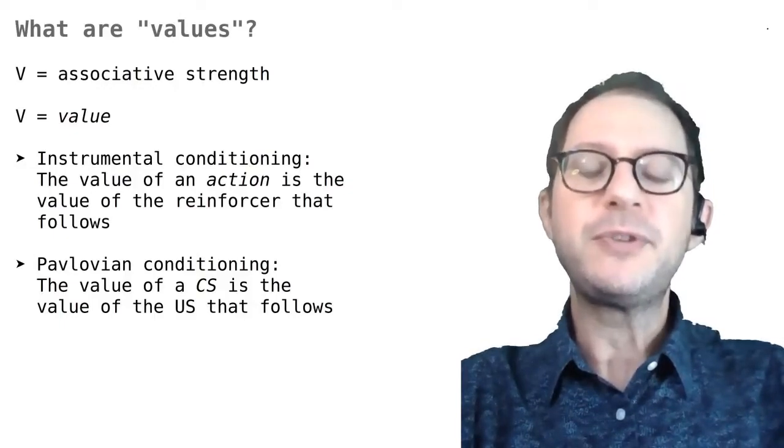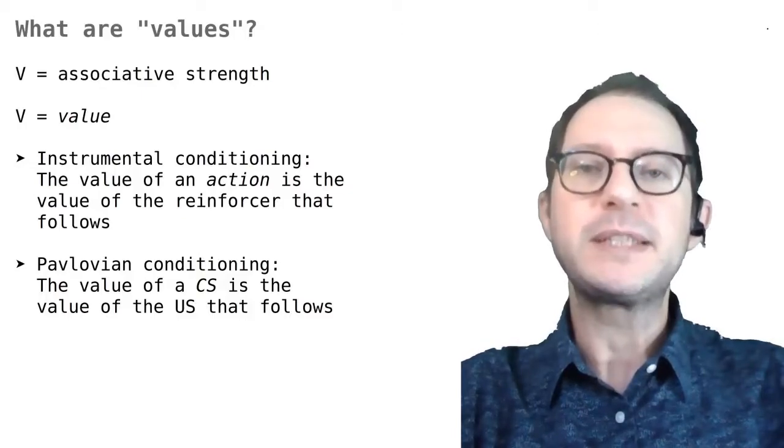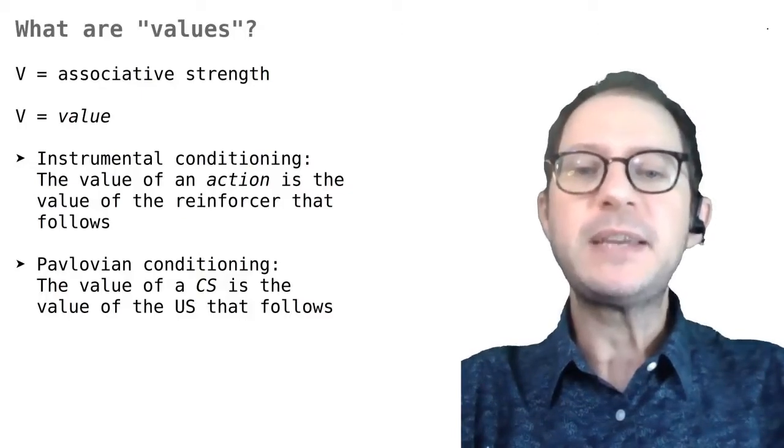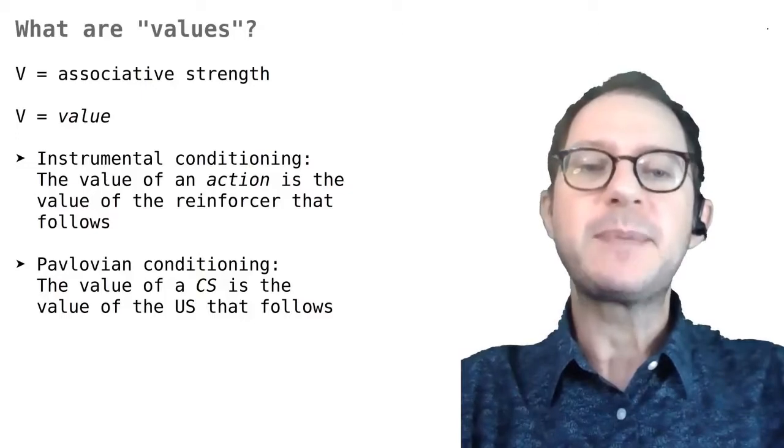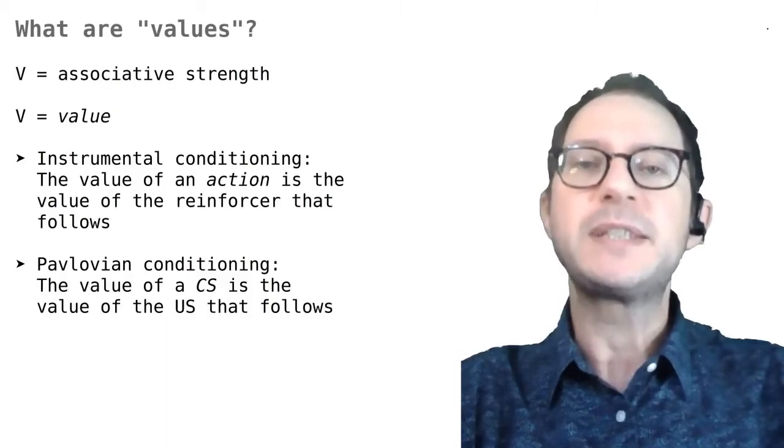In our lesson on conditioned reinforcement, we saw that animals learn to like stimuli that predict valuable stimuli. We are now saying the same thing. Saying that the stimulus becomes a conditioned reinforcement is the same thing as saying that the animal learns to give a value to the stimulus.